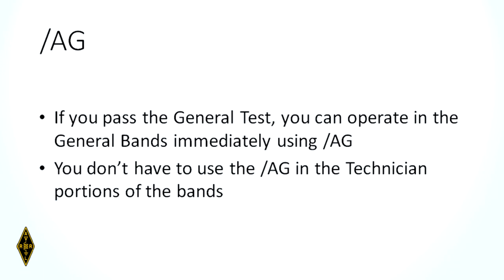When you pass your general test, you are immediately a general class operator. You don't have to wait for any paperwork to come from the FCC. You can go on the air on the general class portion of the bands, but you have to use your technician license and then say stroke AG, or slant AG. AG stands for acting general. You've passed, you can do it — but you only have to do that in the general class portion of the bands. If you want to get on the two-meter repeater, you can still use your technician call sign unless you want to brag.